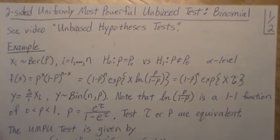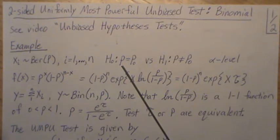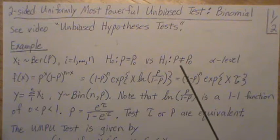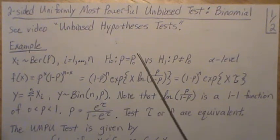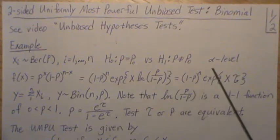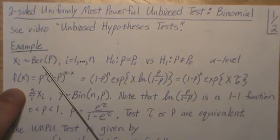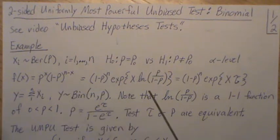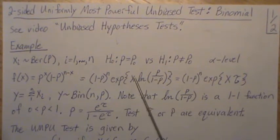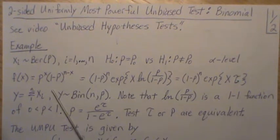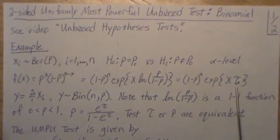Our data is Bernoulli, so it's ones and zeros. We have a sample size n and we want to test is P equal to some value P naught versus the alternative that it's not equal to that value. In the specific example that we do at the end of the video we put 0.75 here, but it's really just some value. We're going to conduct it at the alpha level test. The density or the probability mass function for the Bernoulli is this, and it can be rewritten in this form.